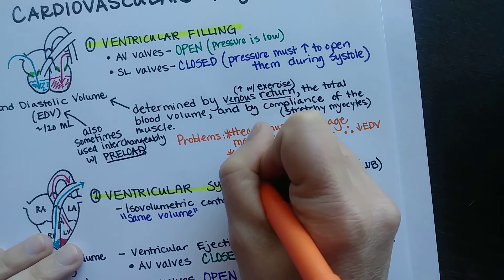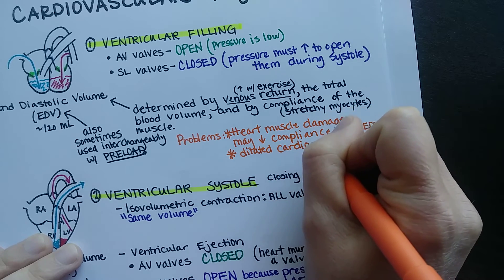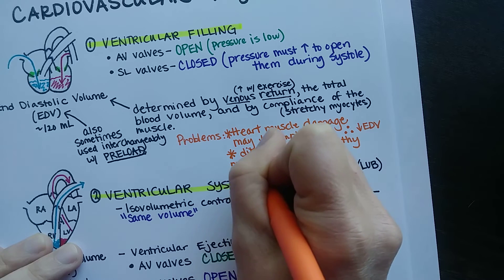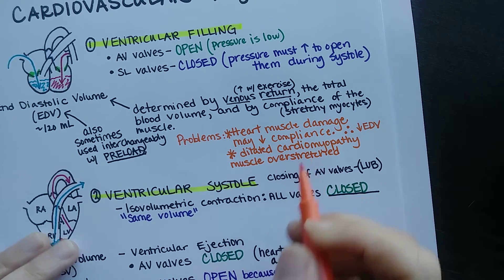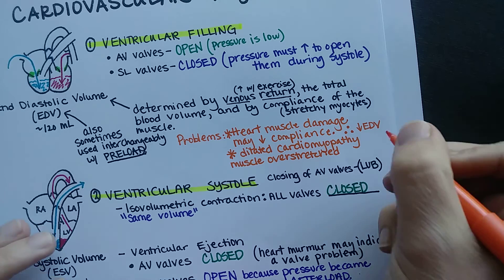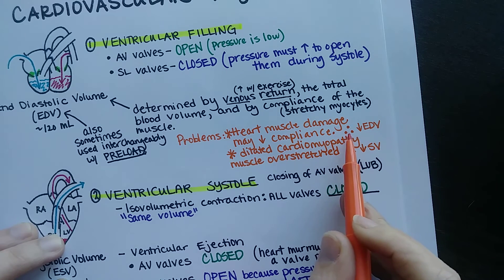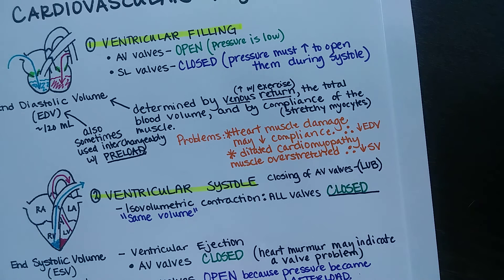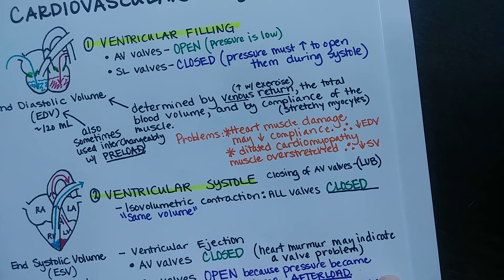Another problem occurs when the heart becomes overly enlarged, as in dilated cardiomyopathy. In that case the heart is over-stretched and lacks leverage when it pumps, leading to a decrease in stroke volume. So in this situation there is a decrease in end diastolic volume and a decrease in stroke volume. These two variables are deeply related through the Frank-Starling Law of the Heart.